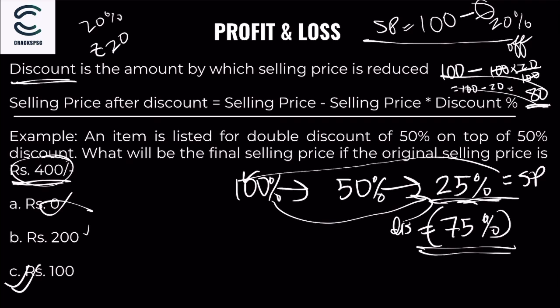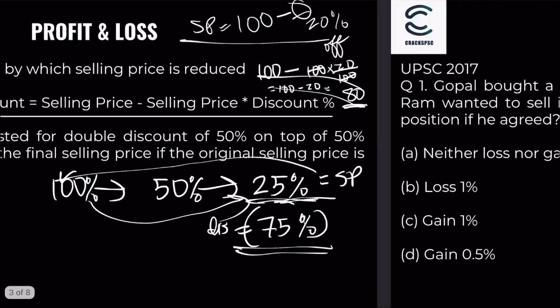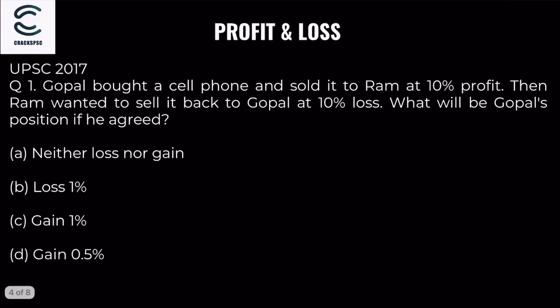Next example: Gopal bought a cell phone and sold it to Ram at 10% profit. Ram then wanted to sell it back to Gopal at 10% loss. What will be Gopal's position if he agreed?